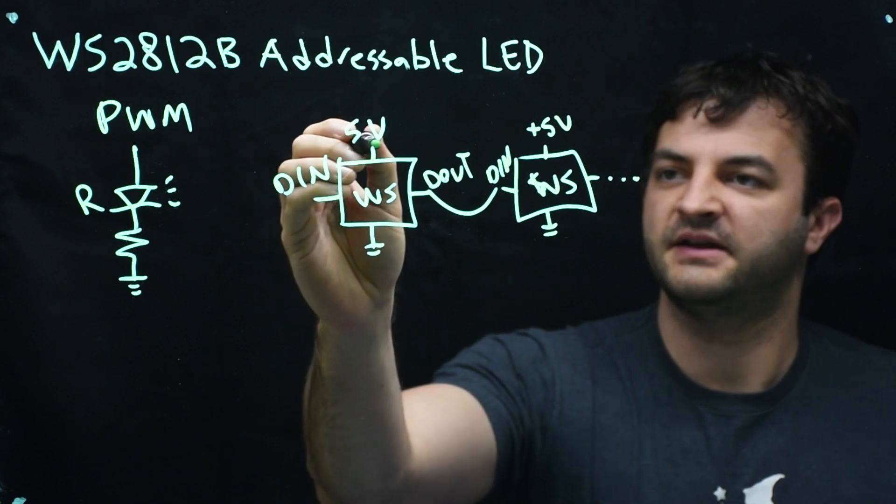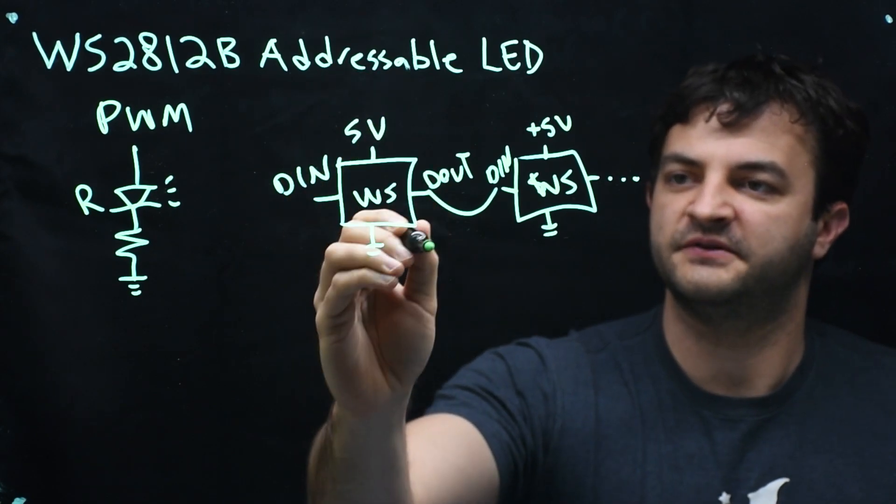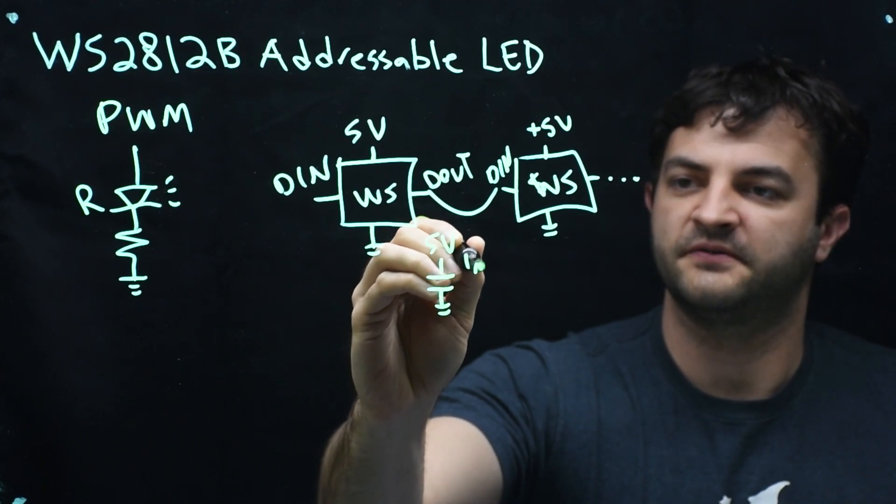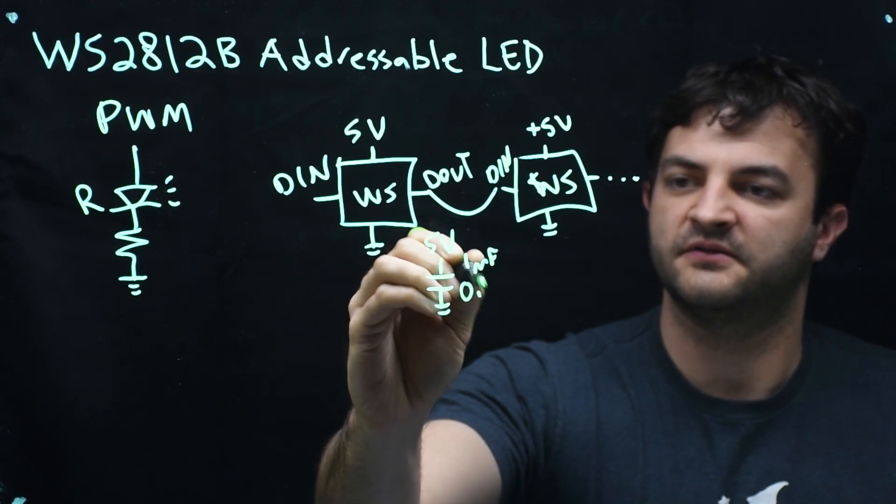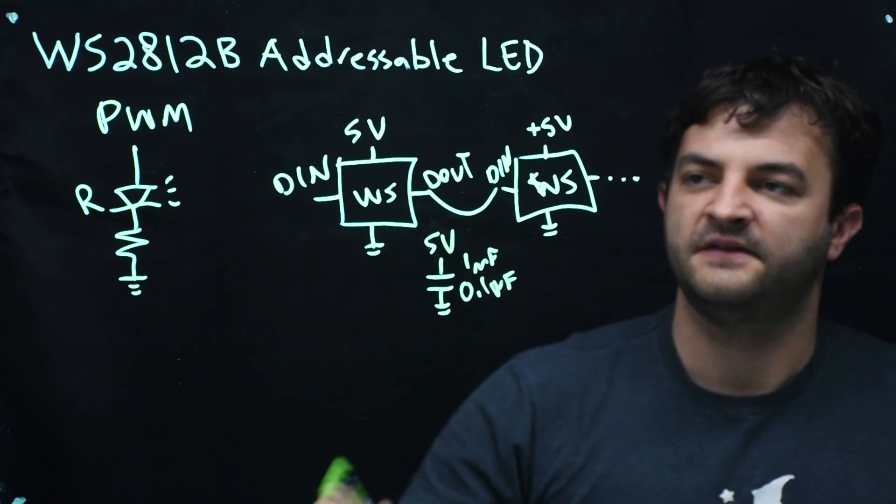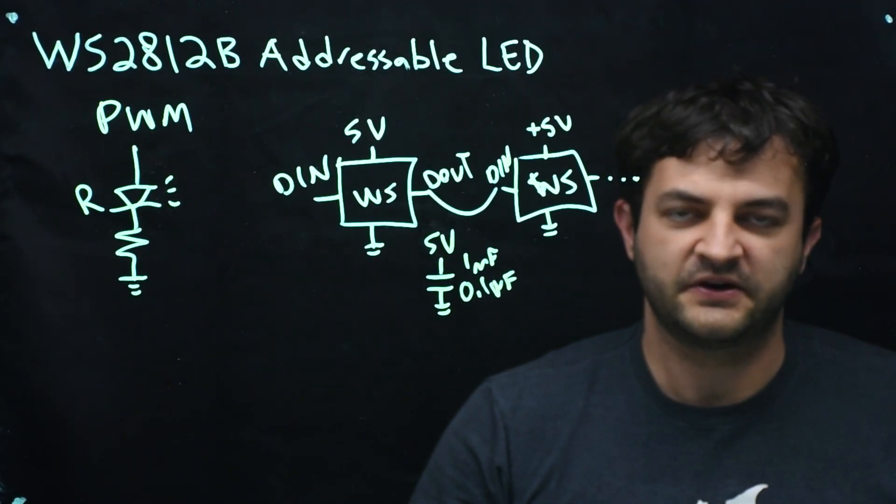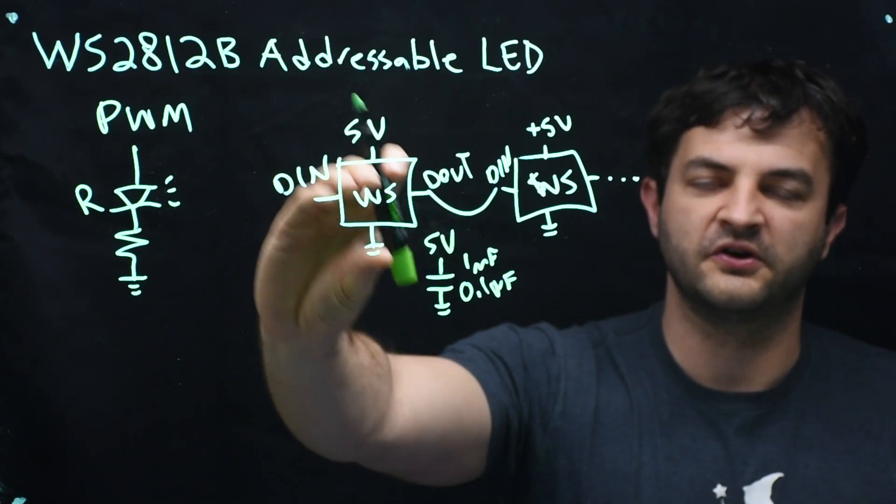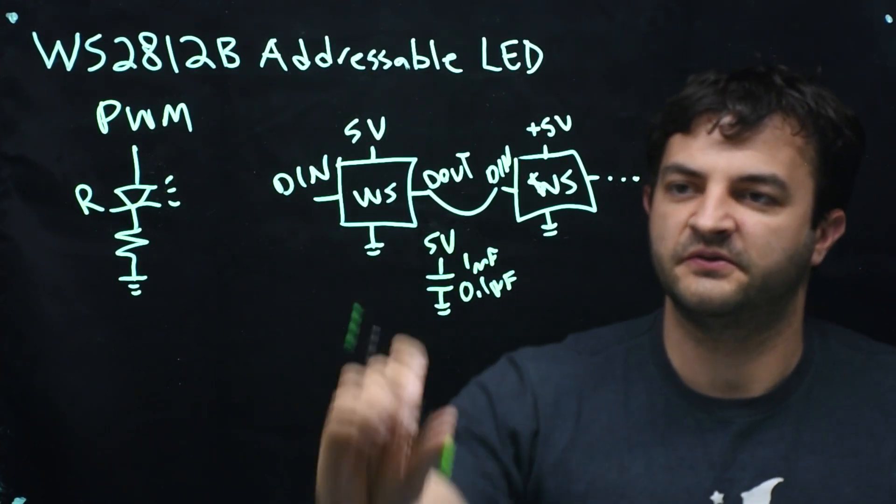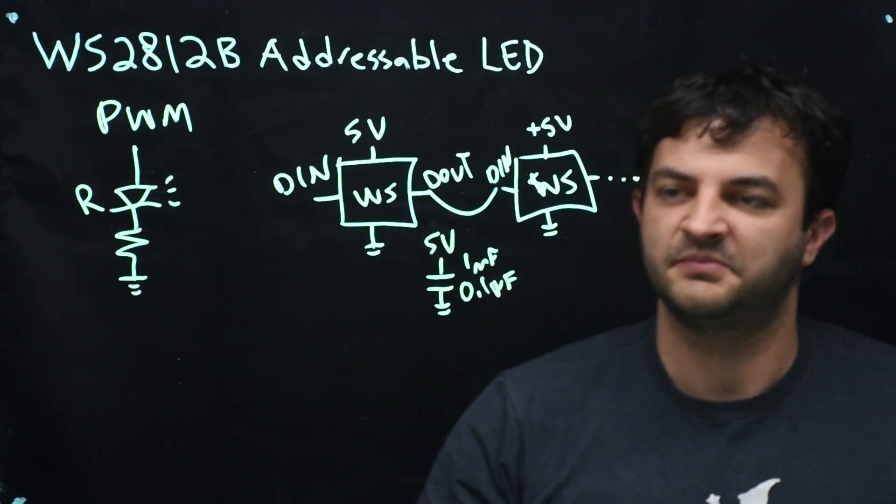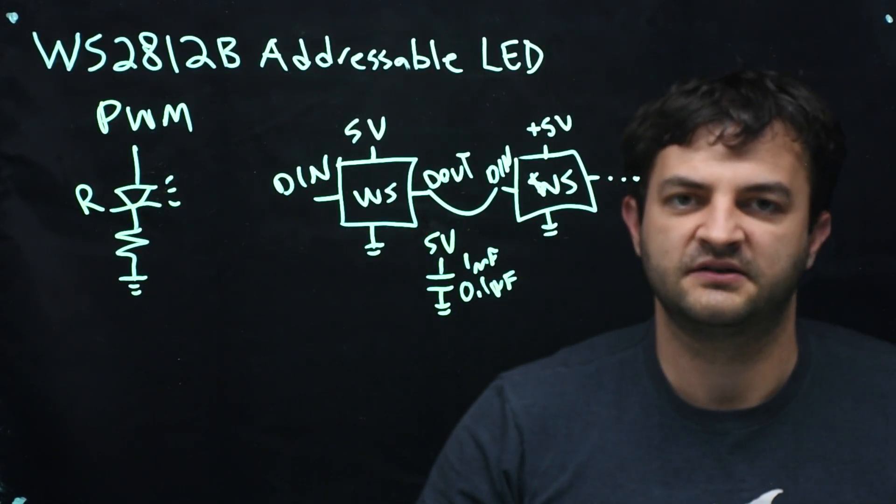They also recommend a capacitor from 5 volts to ground of 1 microfarad or 0.1 microfarads. That's because when we turn on the LED, it might suddenly get very bright very quickly and suck all the local current from that 5 volt source. So the capacitor on every chip or every other chip will supply that current when it changes brightness very quickly.